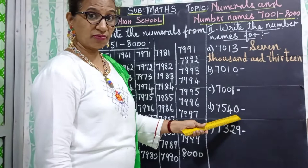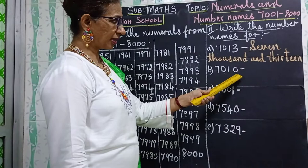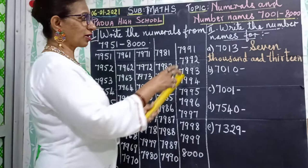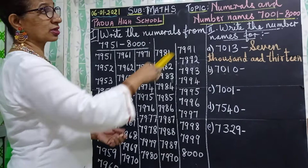So, what is this? 7010, 7001, 7540, 7329 — like that. These 5 numbers also, please write these in your notebook. Write all this and write the exercise.